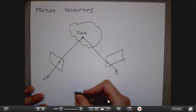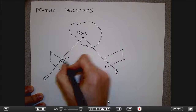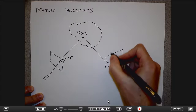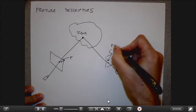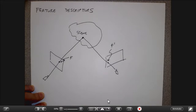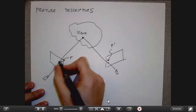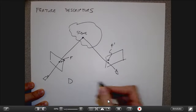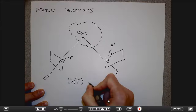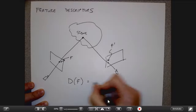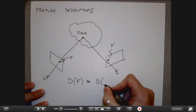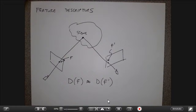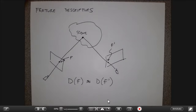Ideally, if this is a feature F in image 1 and F prime is another feature in image 2, I want some algorithm that takes some region of pixels around F and produces a descriptor D. I want the descriptor created around F to be approximately equal to the descriptor created around F prime. A descriptor is really nothing more than a vector — a list of numbers. So we want to figure out what is the best list of numbers to use.